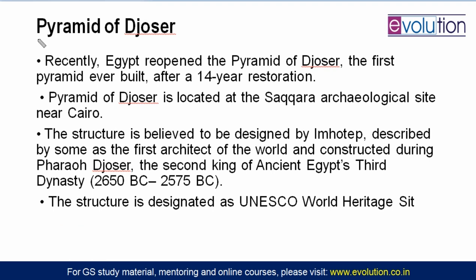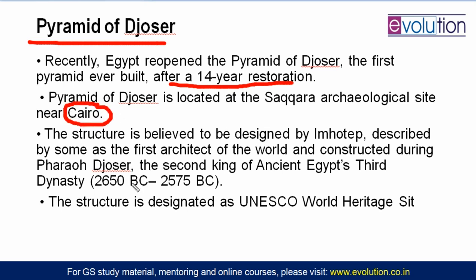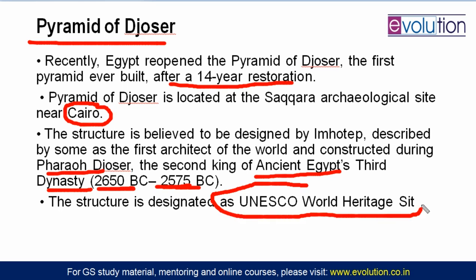The next topic is the Pyramid of Djoser. The Pyramid of Djoser is present in Egypt, near Egypt's capital Cairo. Its peculiarity is that it is the oldest pyramid ever — the first pyramid that was built. It has been reopened after 14 years of restoration. It was created between 2650 BC and 2575 BC by Pharaoh Djoser, the second king of ancient Egypt's third dynasty. The structure has received designation as a UNESCO World Heritage Site.